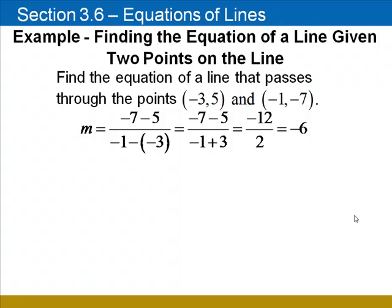Now we could use either of these two points in the point-slope form. I'm going to use the first one, negative 3, 5. I'll replace y₁ by 5, the slope m by negative 6, which we just calculated, and x₁, the x-coordinate of that first point, by negative 3.